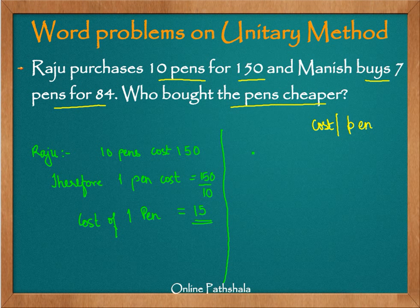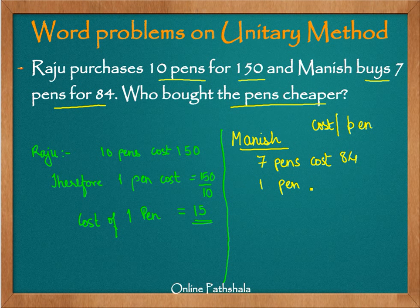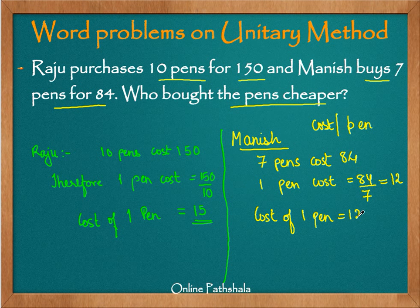Now let us find the cost of one pen for Manish. For Manish, 7 pens cost him 84 rupees. Therefore, one pen costs 84 divided by 7, which is 12 rupees. So the cost of one pen for Manish is 12 rupees. For Raju it is 15 rupees whereas for Manish it is 12 rupees. Therefore, Manish bought the pens cheaper.